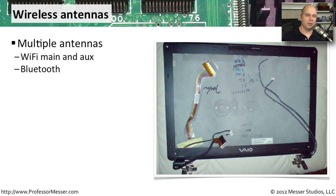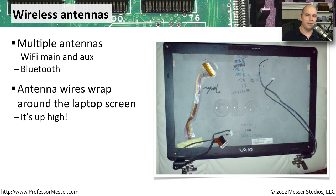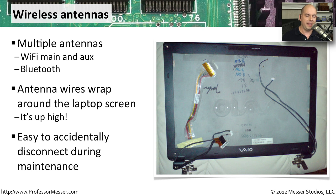If you could look behind the front bezel of your laptop screen, you would see a lot of wires wrapped around the edge. Most of these are for your wireless networks — like your 802.11 wireless or Bluetooth connections — and they're wrapped up there so that when you open the screen, they're as high as possible. Be sure that if you're ever working inside your computer doing maintenance, you don't accidentally disconnect any of those wires. If you've restarted your computer and suddenly can't see your wireless network, it may be because you accidentally disconnected your antennas.